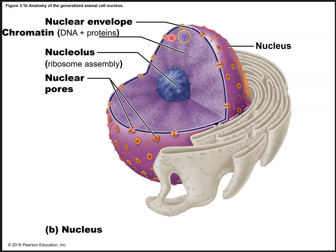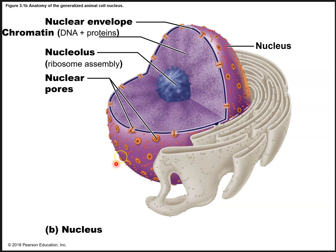Inside the nuclear envelope there is the chromatin, which is DNA and proteins held together in a very complex form. This dark blue region is the nucleolus — the nucleolus is important for ribosomal assembly, and ribosomes are the structures in the cell that make protein. If you look at the nuclear envelope carefully, you see little channels called nuclear pores, which allow passage of substances in and out of the nucleus.